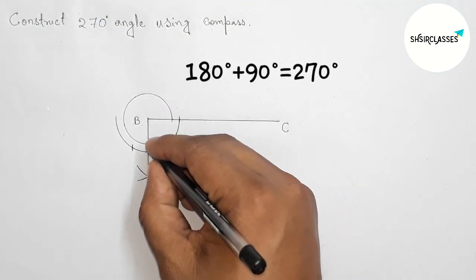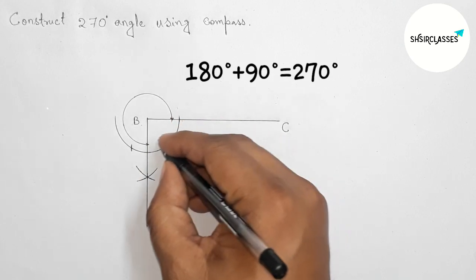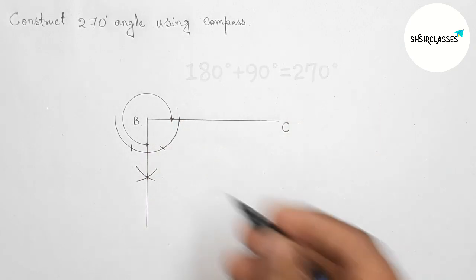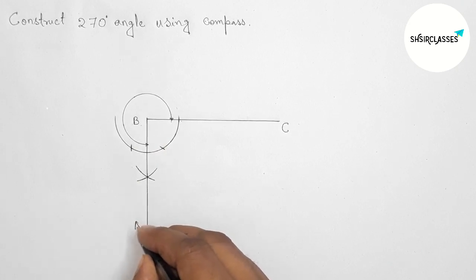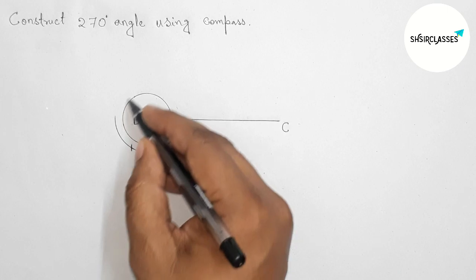is a total of 180 plus 90, which is a total of 270 degrees. So here, taking point A, angle ABC